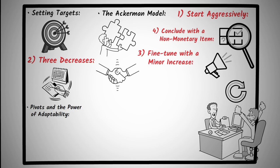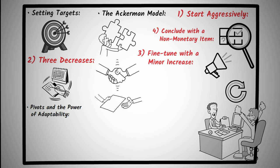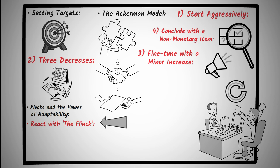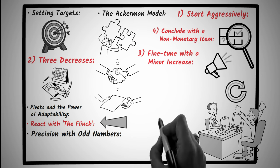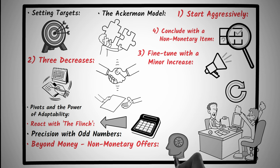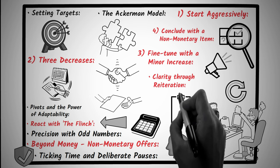One, pivots, and the power of adaptability. Not every negotiation will follow a script. When faced with unexpected offers or resistance, don't push blindly towards your initial target. Instead, pivot, adapting your strategy to the dynamics of the conversation. React with the flinch. A genuine, visible reaction to an unexpected term can be powerful. It signals your discomfort, prompting the other party to reconsider their stance. Precision with odd numbers. Use non-rounded numbers in your offers. Their specificity can make them appear well researched, giving them more weight. Beyond money, non-monetary offers. Remember, value isn't just monetary. Introducing non-cash terms can make an offer more attractive without affecting your core objectives. Ticking time and deliberate pauses. Use time as an ally. Deliberate pauses or drawing out negotiations can exert subtle pressure, making the other party more eager to close. Clarity through reiteration. Once you believe you've struck a deal, restate the terms. This ensures mutual understanding and minimizes future disputes.